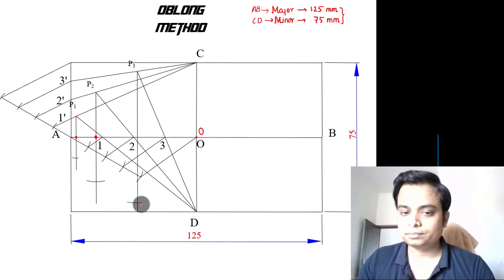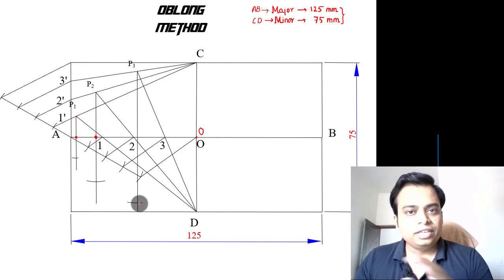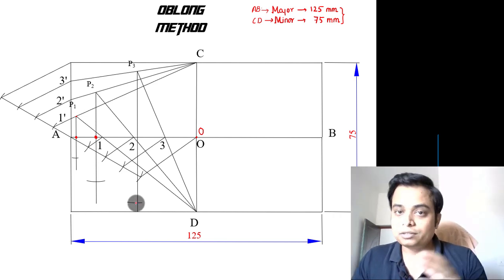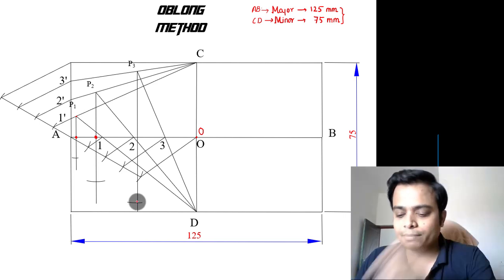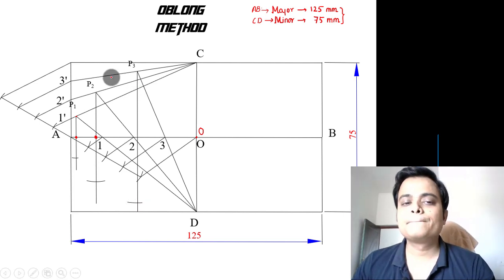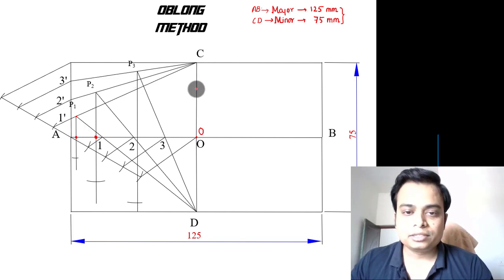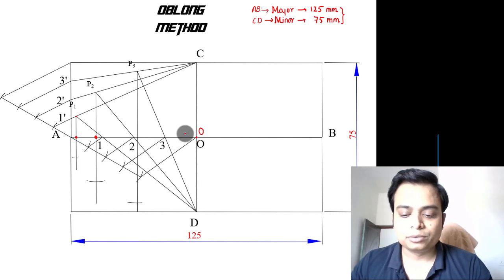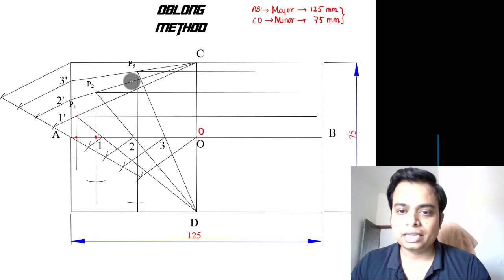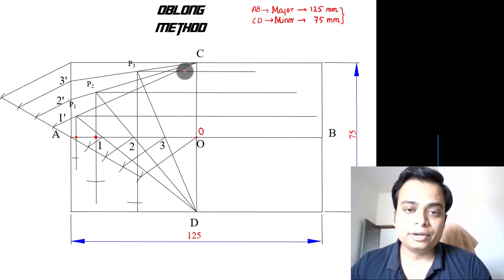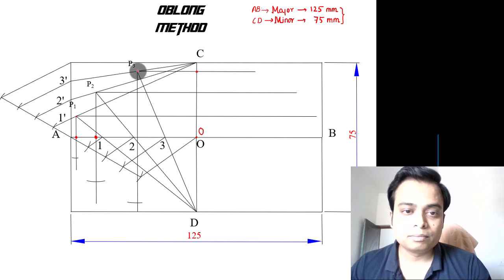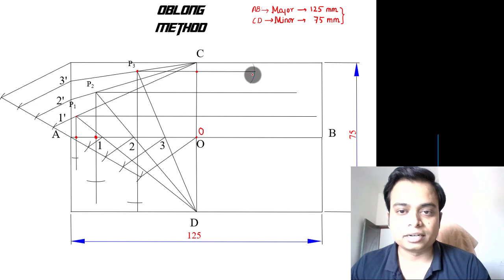Now I'll reflect these points over to this side, and for that this is going to be the axis of reflection. So I'll draw horizontal lines from P1, P2, and P3 something like this. Now it's going to be very interesting: with this and this, take this much as the radius and with this as the center cut an arc. This is precisely the reflection of P3—let's call this P3 double dash.